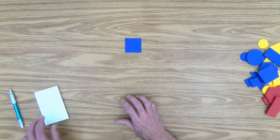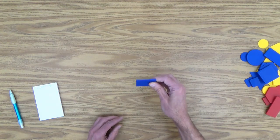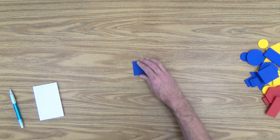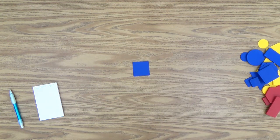And that, of course, is a large blue thin square. So that's the what's my block game.